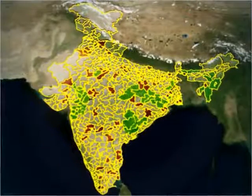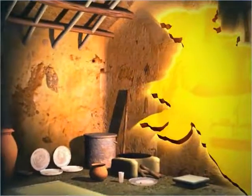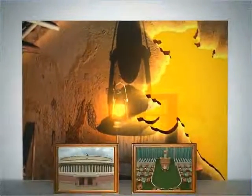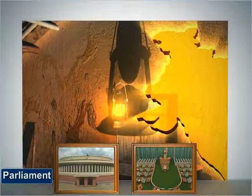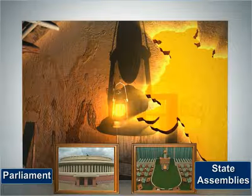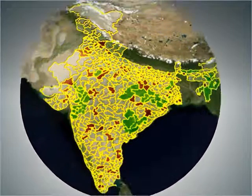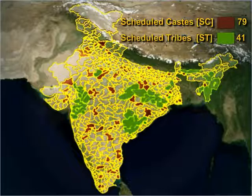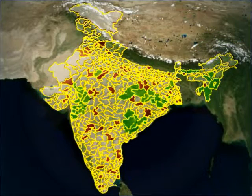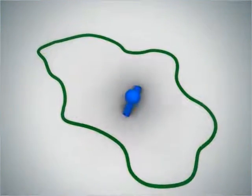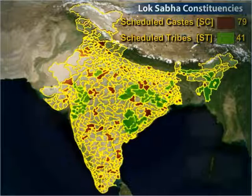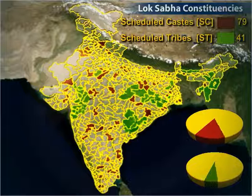The constitution framers have provided the system of reserved constituencies for the weaker sections. This was done with foresight to ensure proper and ratio-based representation to the socially and economically deprived and weaker sections in the Parliament of India and the State Assemblies. Under this system, some constituencies are reserved for people belonging to the Scheduled Castes (SC) and Scheduled Tribes (ST). This means that in an SC-reserved constituency, only someone belonging to the Scheduled Castes can stand for election. The number of reserved seats is in proportion to their share in the total population.